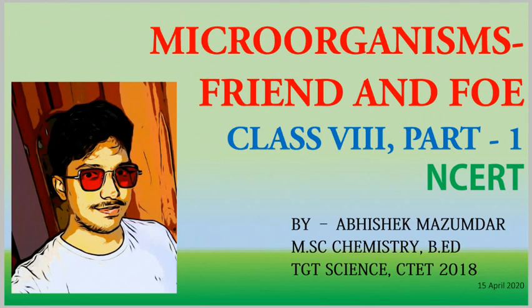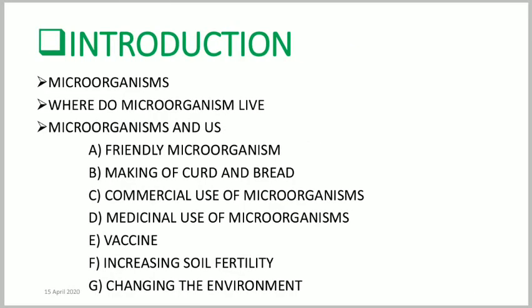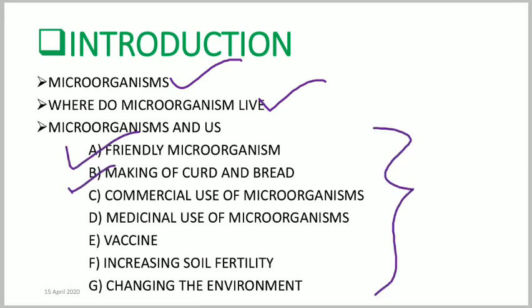Today we are going to complete another new chapter of Class 8 Science NCERT. It is going to be the first part of Chapter Microorganism: Friend and Foe. We will complete topics like what are microorganisms, where do microorganisms live, and microorganisms and us — including subtopics like friendly microorganisms, making of curd and bread, commercial use, medicinal use, vaccine, increasing soil fertility, and changing the environment with the help of microorganisms.